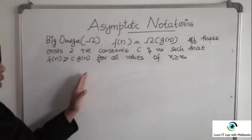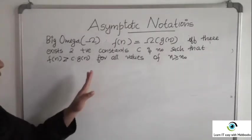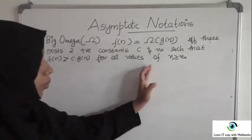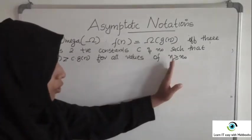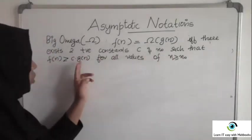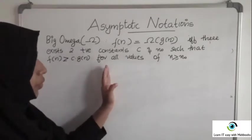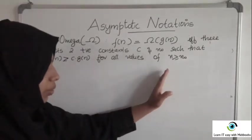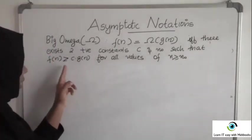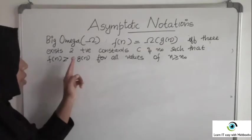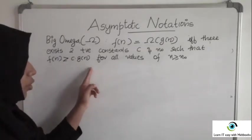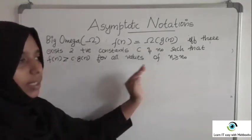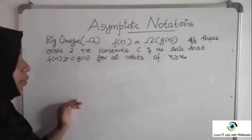Let's see Big Omega first. The definition is: F of N equals Big Omega of G of N if there exist two positive constants C and N0 such that F of N is greater than or equal to C times G of N, for all values of N greater than some N0.